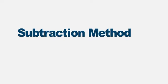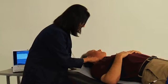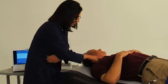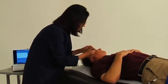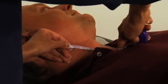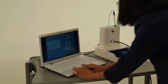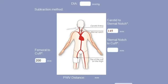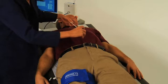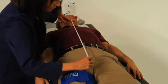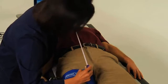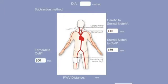If the subtraction method is selected, the distance must be measured from the point of the strongest carotid pulse to the sternal notch. Palpate the carotid artery to identify the strongest pulse point. Measure the distance in a straight line from this point to the sternal notch and enter the value in the box marked Carotid to Sternal Notch. Take a second measurement from the sternal notch to the top of the femoral cuff and enter the value in the box marked Sternal Notch to Cuff.